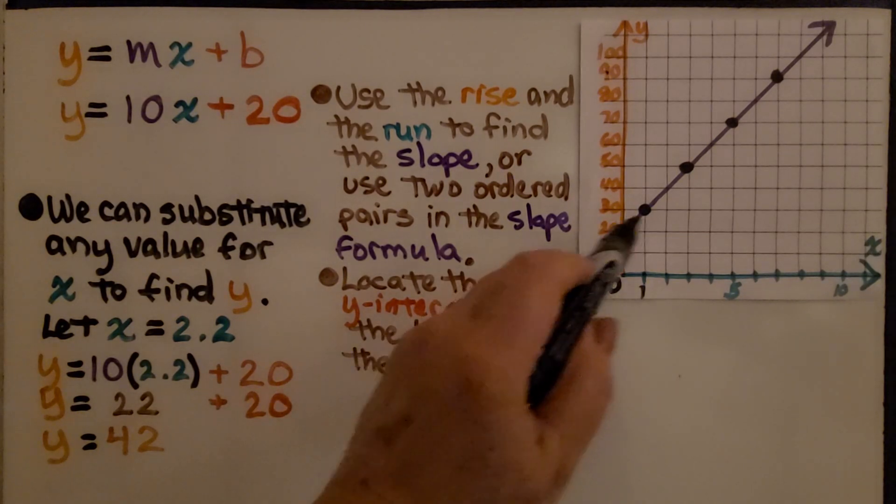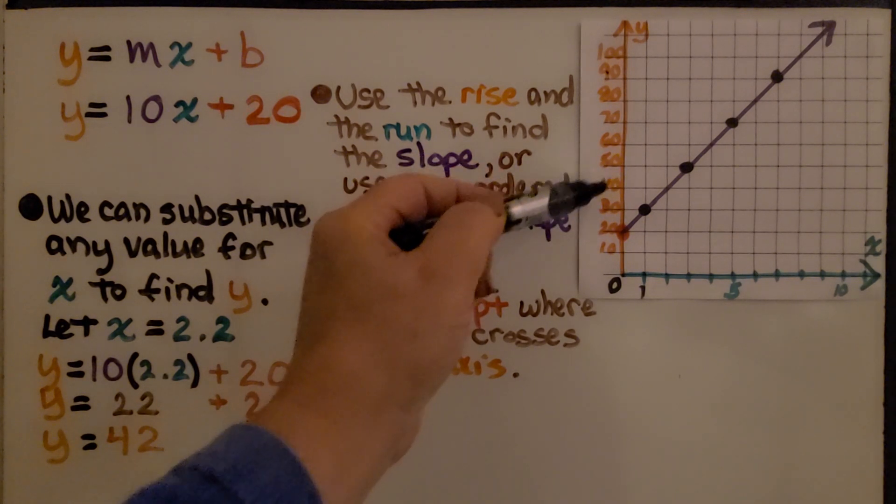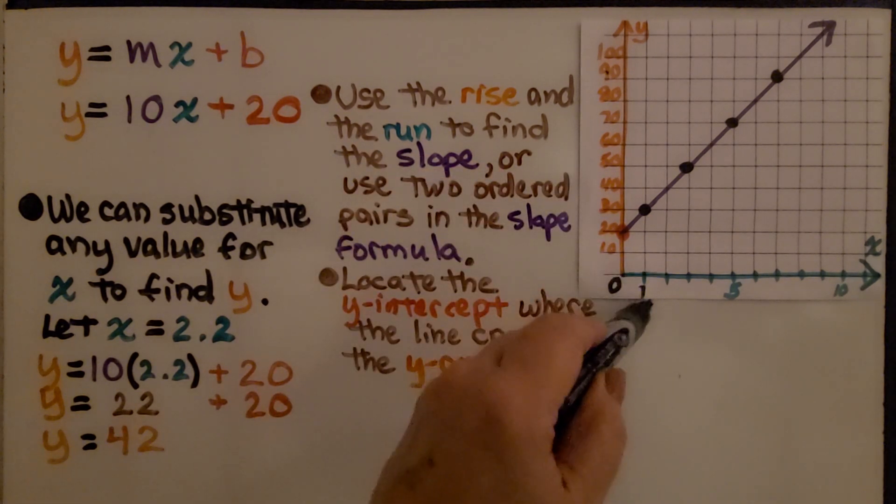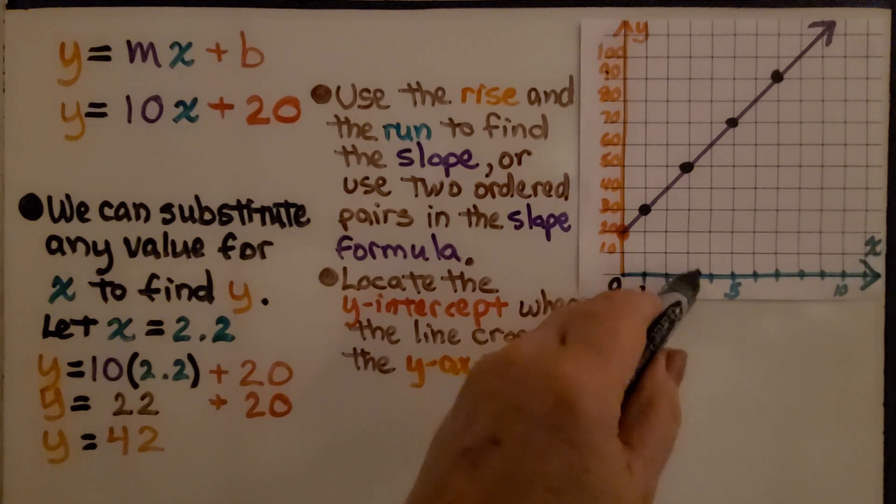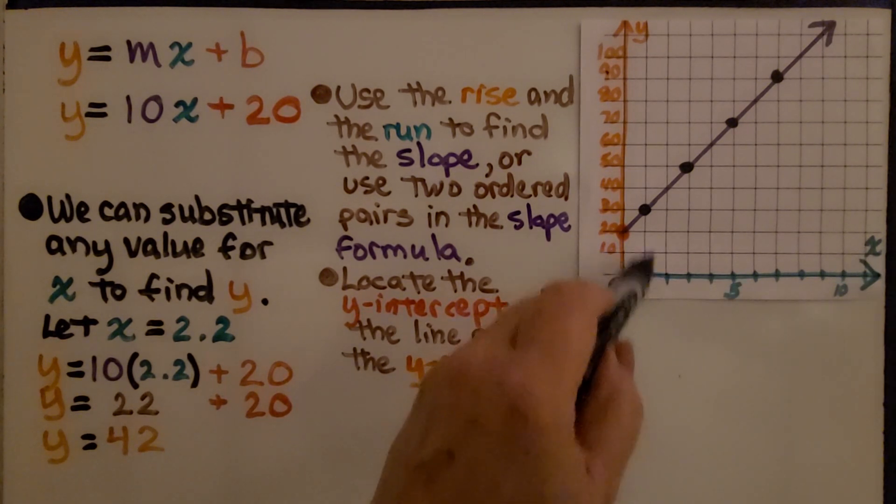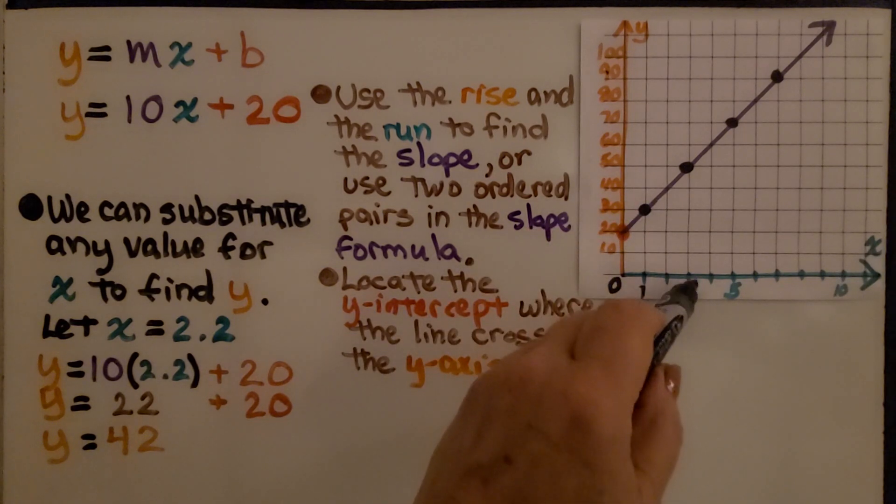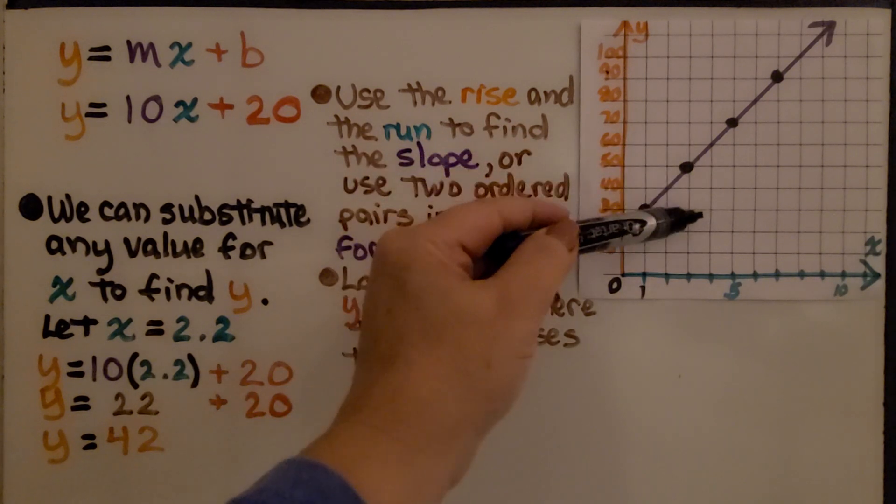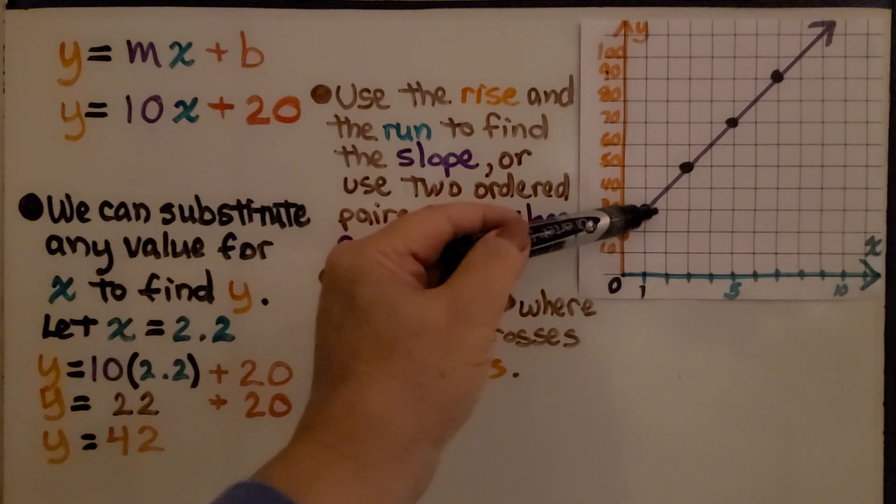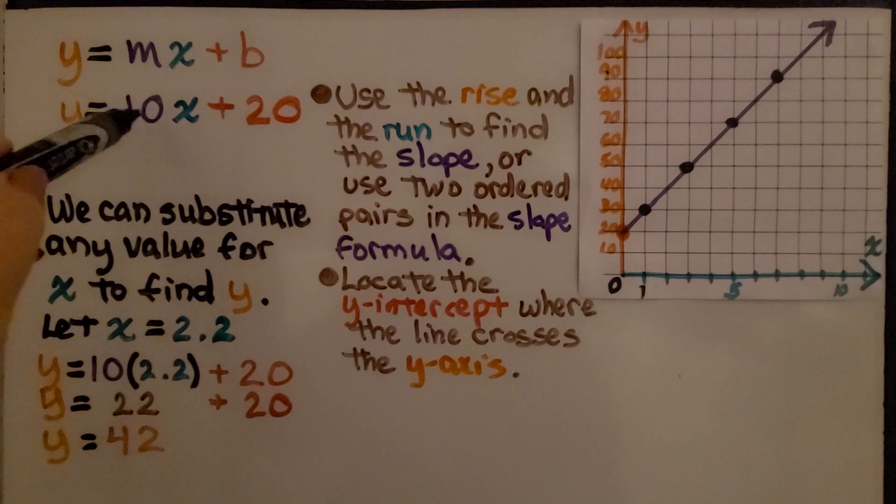We can choose any two points. We can see that each of the y values change by 10 and each of these grid lines is 1. So we have 1, 2, 3, 4, 5. We can use 130 and 350 and see that the rise is 20 over the run of 2. 20 over 2 simplifies to 10. We quickly find the slope that way.